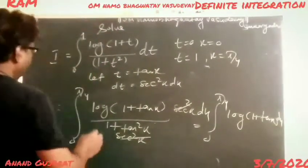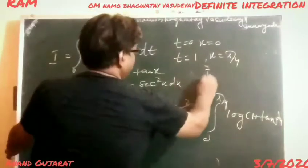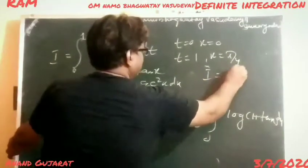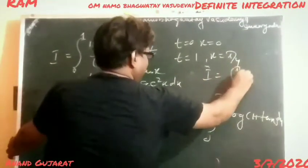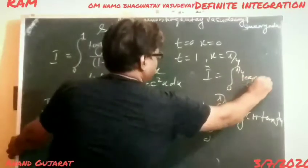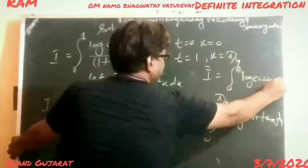So i = integration from 0 to π/4 of log(1 + tan x) dx.